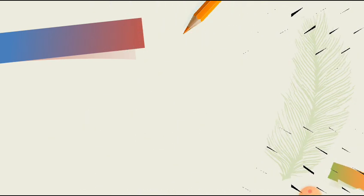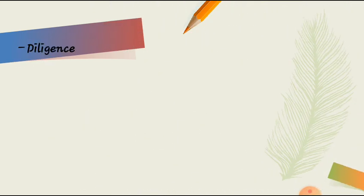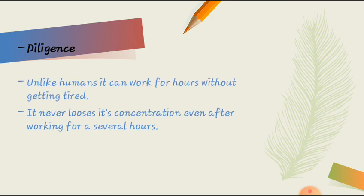The second is diligence. The computer is an intelligent machine. Why? Because computers are such a machine which are unlike humans. It can work for hours and hours without getting tired. It is also a machine which never loses its concentration even after working for several hours.